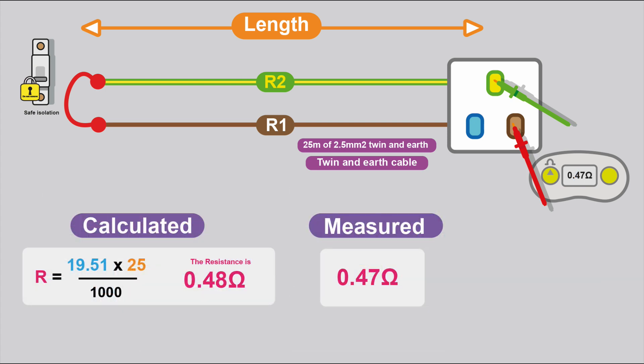You can compare that 0.48 ohms to the reading you've got. So it's important that you do take a reading with your metre because you want to confirm the installed circuit and make sure it's installed correctly.